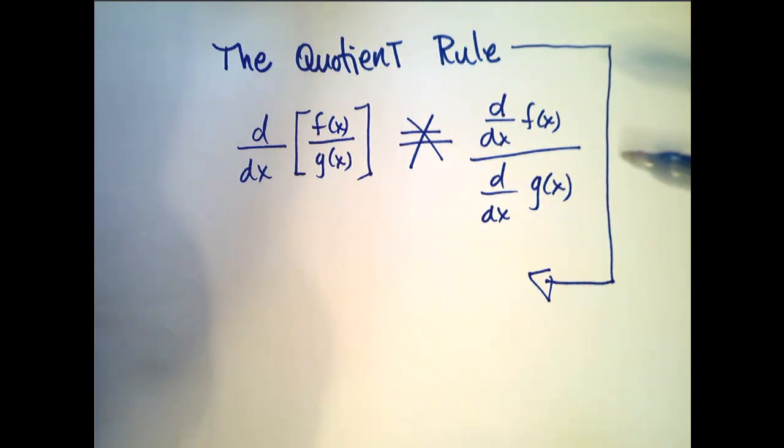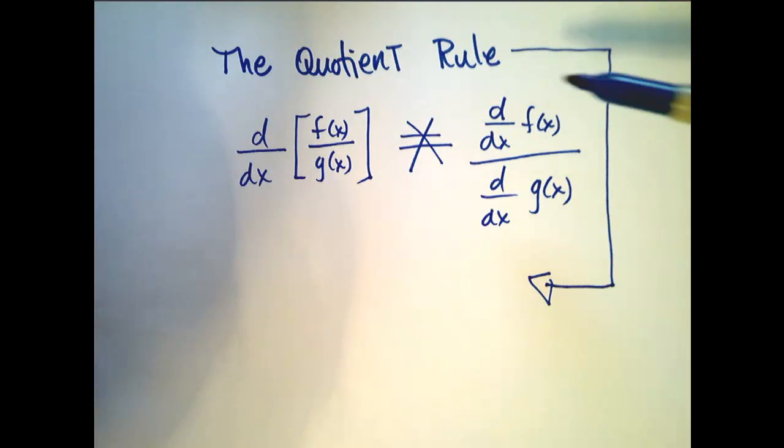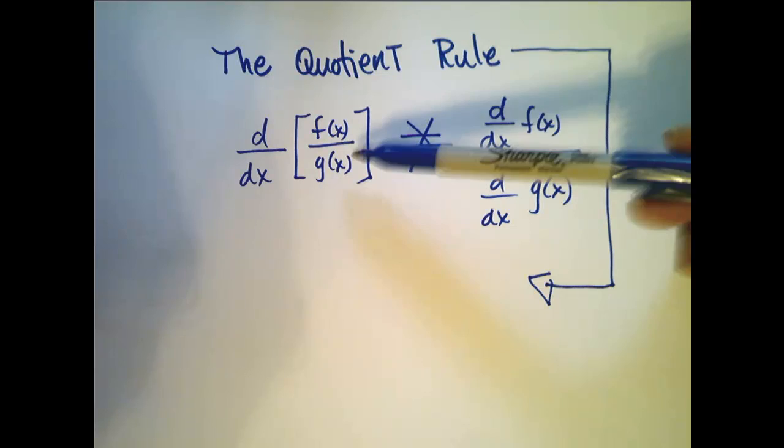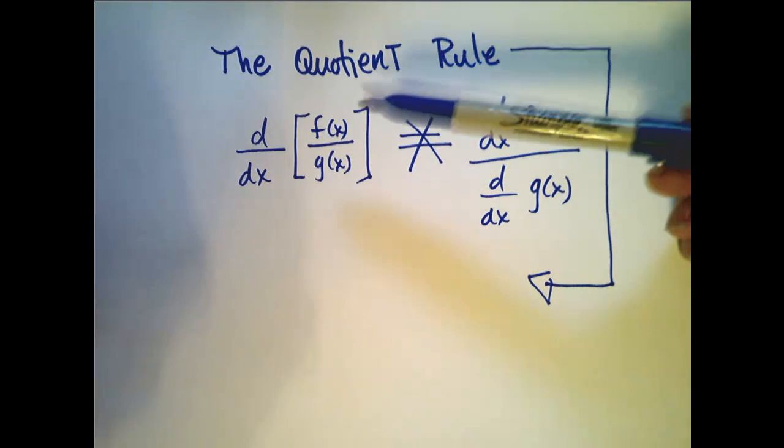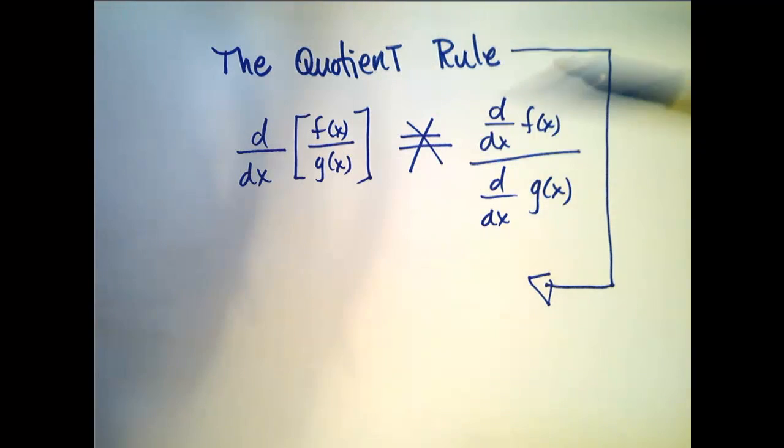Now we're going to state and work with the quotient rule for derivatives. As you could probably guess from the last video, the derivative of the quotient of two functions is not equal to the quotient of the derivatives. You can't take the derivative of the top and divide it by the derivative of the bottom. Those are not equivalent and we will see that in an example in just a minute.